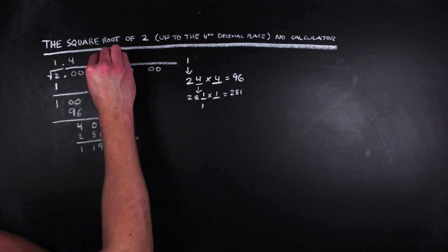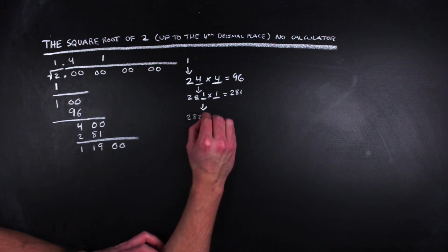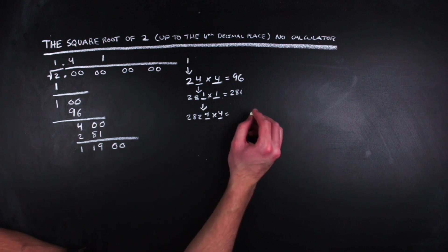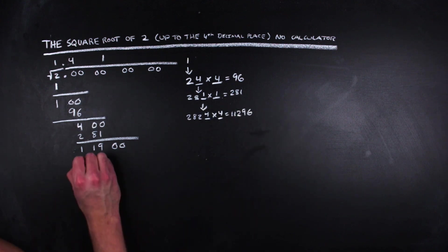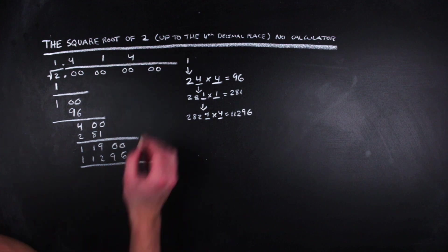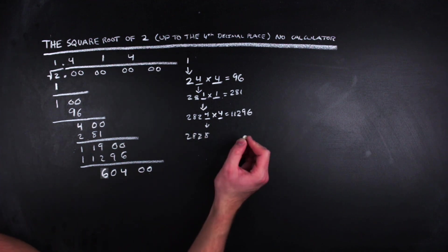Speeding up here a little bit, we pull down and double the one, adjoin the best choice which is four, to complete the computation to yield 11,296, which gives 604 left over. And then we pull down our last two zeros.